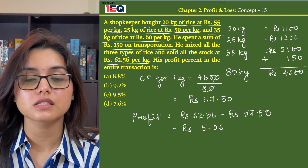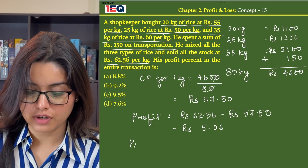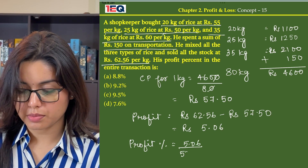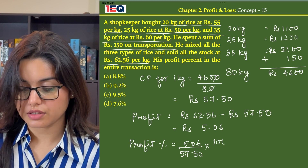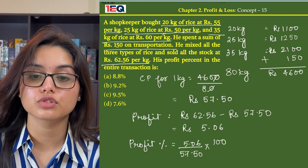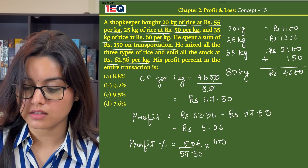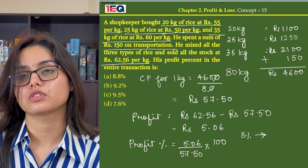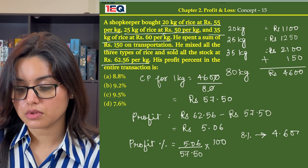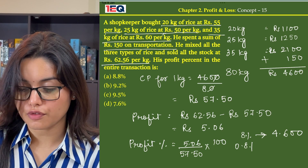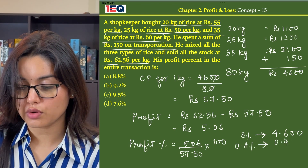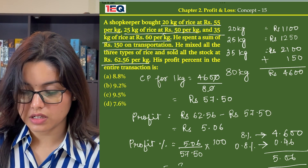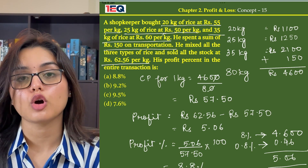In the question, we have to find the profit percent in the entire transaction. Profit percent equals profit divided by cost price, multiplied by 100. Now instead of calculating further, we can go through the options. Starting with option A, 8% of 57.50 gives us Rs 4.60, and 0.8% of 57.50 gives us Rs 0.46, which together give us Rs 5.06. So the answer to this question is 8.8%, which is option A.